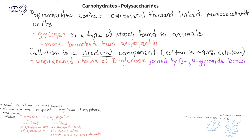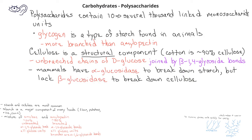This is an important difference in understanding why animals, specifically mammals, can digest starch but cannot digest cellulose. Mammals have enzymes known as alpha-glucosidase, which hydrolyzes the alpha-1,4 glycoside bonds. This allows mammals to break down amylose, amylopectin, or glycogen.